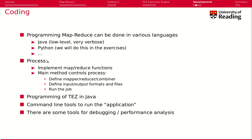How do we do it? We actually implement the MapReduce functions, and then we have a main method that controls the processes — defining which MapReduce to use, which combiner, which input/output formats and files to run. We basically submit this main method together with our MapReduce functions and it runs. You can also program tests directly, which is a bit tedious. We have command line tools that run an application.